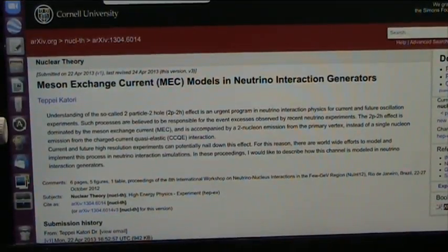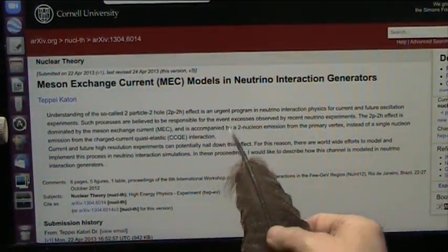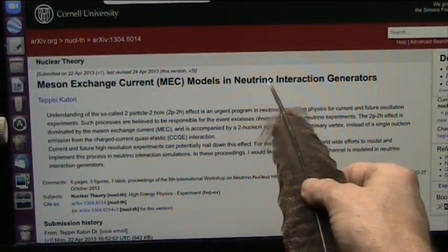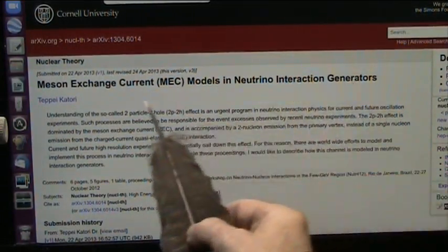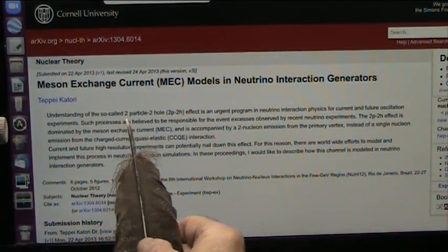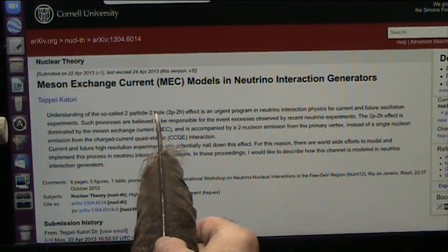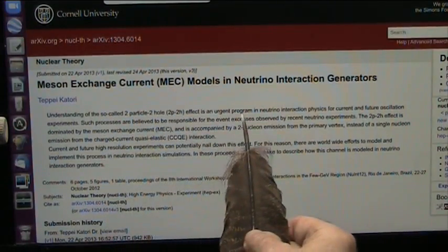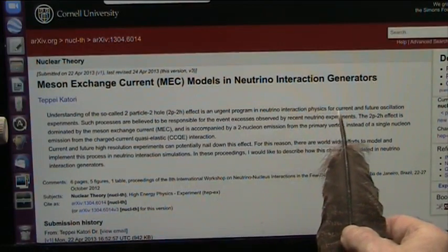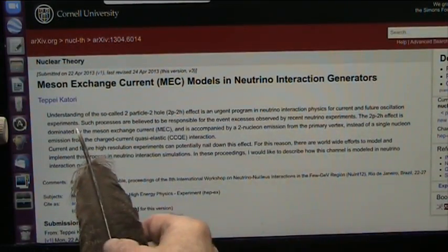Okay, my friends, the world is in trouble, and this could be a way out. A model in neutrino interaction generators. Understanding the so-called two-particle, two-hole effect, urgent program in neutrino interaction physics for current and future oscillation experiments.